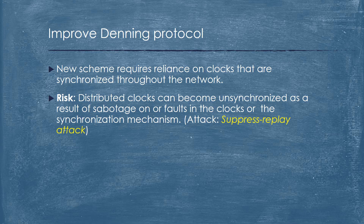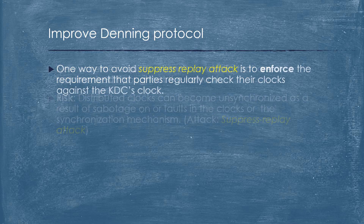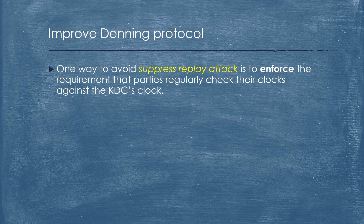Improved Denning protocol: this new scheme requires reliance on clocks that are synchronized throughout the network. A risk is that distributed clocks can become unsynchronized as a result of sabotage or faults in the clocks or the synchronization mechanism. To avoid suppress-replay attacks, one way is to enforce the requirement that parties regularly check their clocks against the KDC's clock.